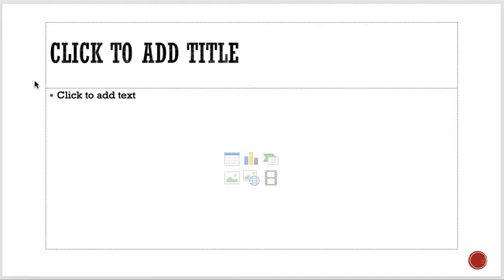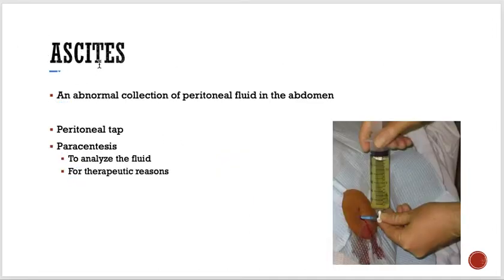The most common cause of ascites is portal hypertension — where the pressure in the portal circulation is increased. The most common cause of portal hypertension is liver cirrhosis, so most patients with ascites in clinical practice have liver cirrhosis. Causes of cirrhosis include hepatitis B and C infections, among many others. That is why we perform paracentesis to analyze the peritoneal fluid.